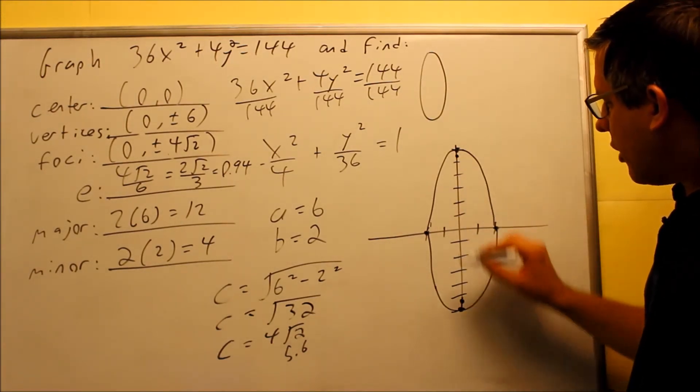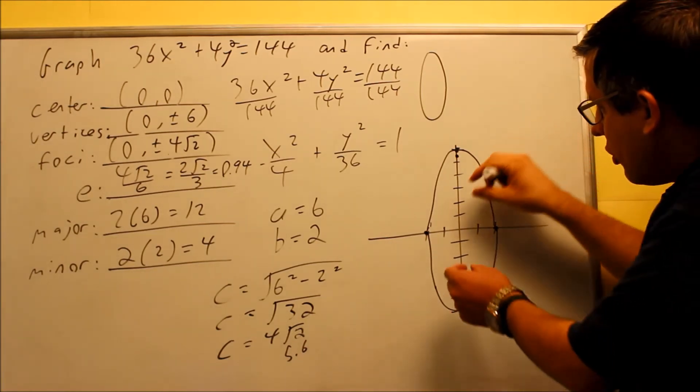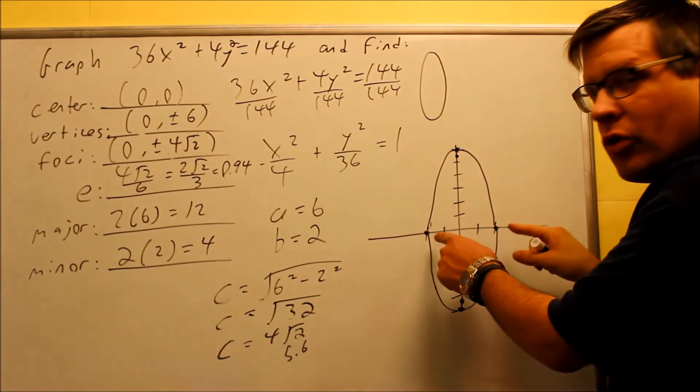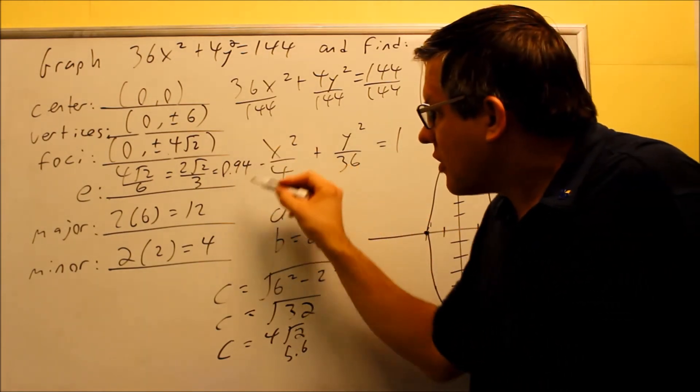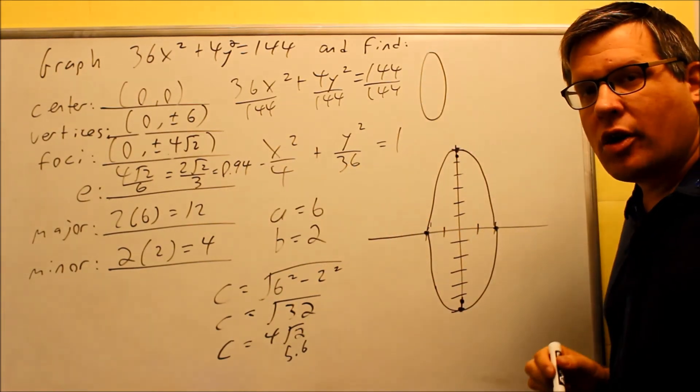So again, it's a little bit more narrow than the one we did before because it's a little bit longer this direction with the same width, so that's why it becomes more narrow there, and that's again because of the eccentricity, 0.94 is closer to 1.